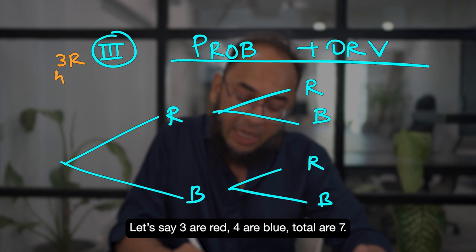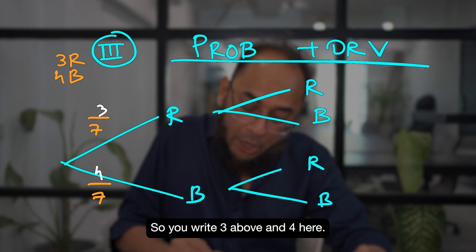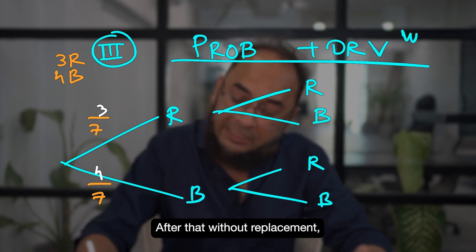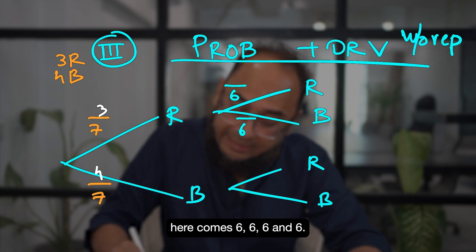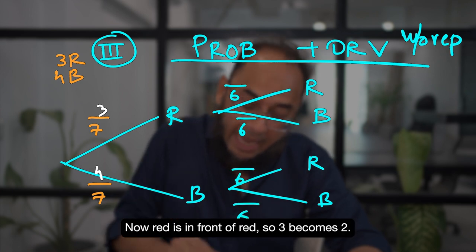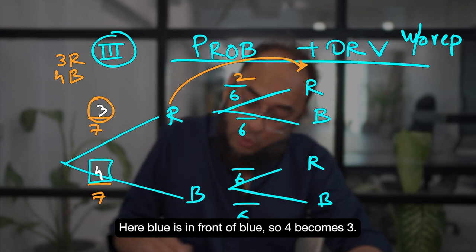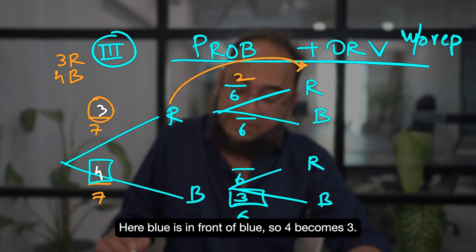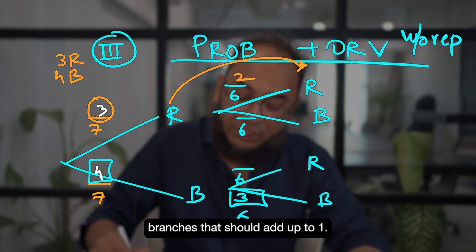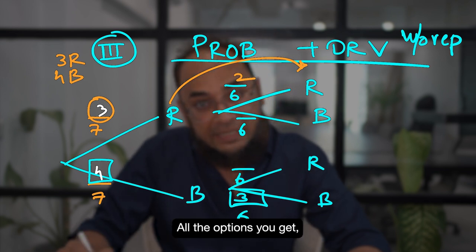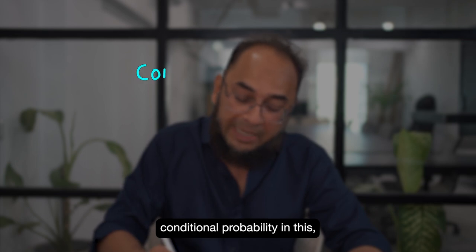Let's say teen red hain, chaar blue hain, total seven. Toh aapne oopar likha 3, yahan likha 4. Without replacement ka matlab hai niche ek kam ho gaya, toh yahan 6 ho gaya across all branches. Ab yahan red ke saamne red hai, so three becomes two; yahan blue ke saamne blue hai, so four becomes three. Yeh bhi aapko maloom hona chahiye ki jo total hai in any branches, that should add up to one — jitne options aapke phansenge, they should all add up to one. Isi mein conditional probability ka question aata hai.